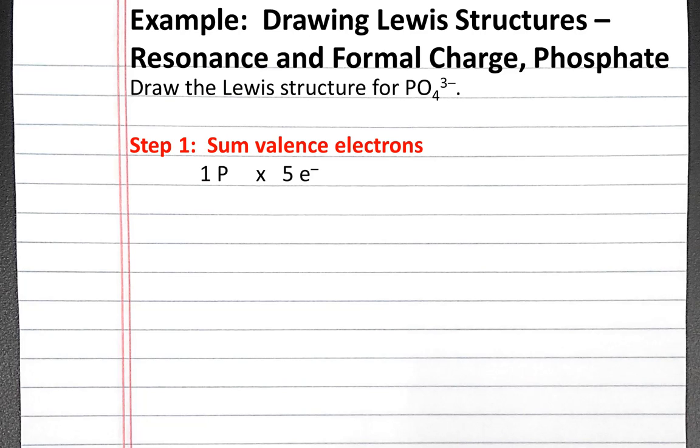There is one phosphorus atom, and it has five valence electrons. There are four oxygen atoms, each of which have six valence electrons, and the charge is 3 minus, which increases the number of electrons by 3. So in total, we have 32 valence electrons.